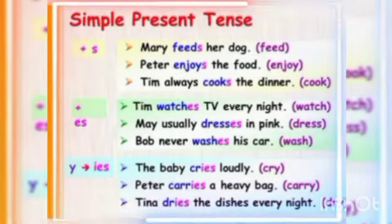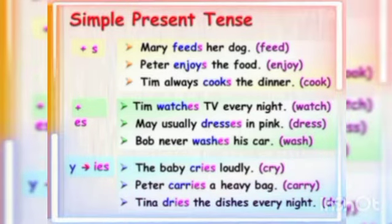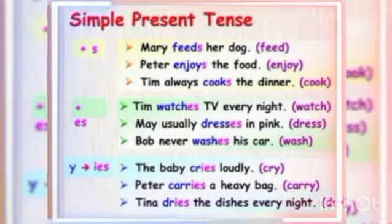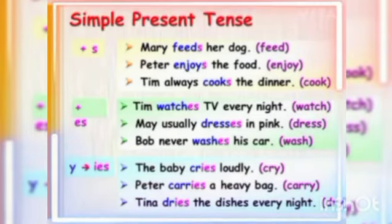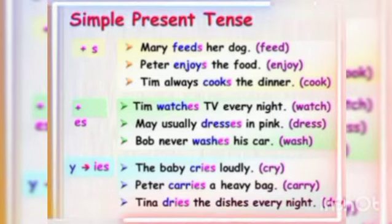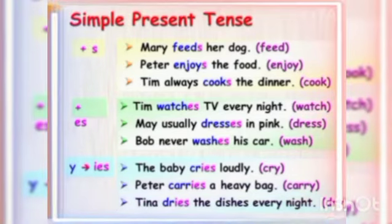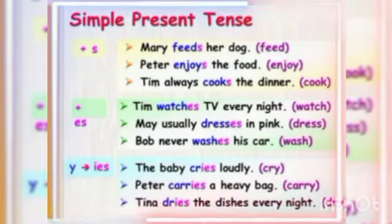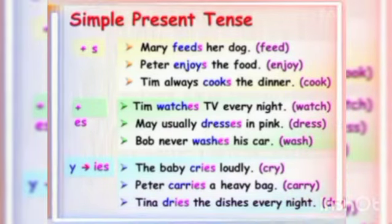Now, Tim watches TV every night. Tim is still singular, but here we added ES. Why? Because the verb ends in CH. So when the subject is singular and your verb ends in CH, SS, or SH, then you add ES. Like, May usually dresses in pink — double S, so ES is added. Bob never washes his car — ES has been added because the verb ends in SH.